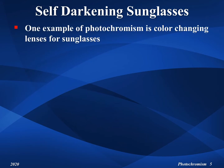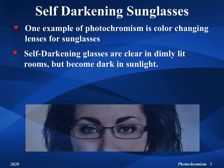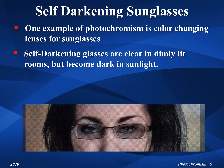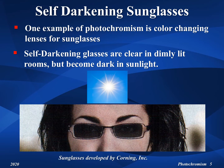One example of photochromism is color changing lenses for sunglasses. As shown in these photos, self-darkening glasses are clear in dimly lit conditions but become dark in sunlight. The sunglasses shown in the photos were developed by Corning Incorporated.